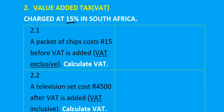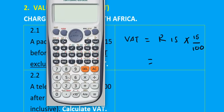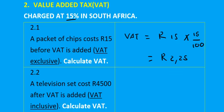Let's look at some VAT calculations. A pack of chips costs R15 before VAT is added — this is a VAT-exclusive price. To calculate the VAT, you multiply by 15/100: 15 × 15/100 = R2.25. So the VAT on the chips is R2 and 25 cents.